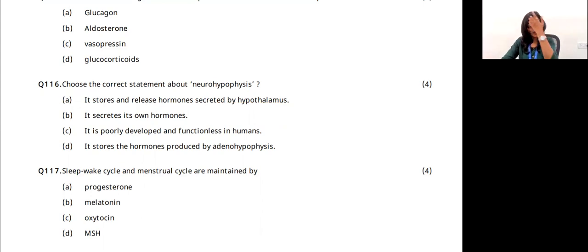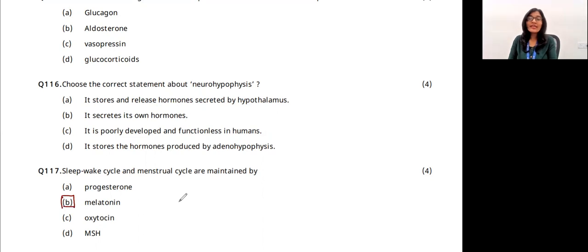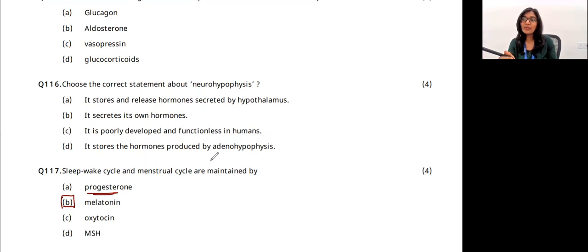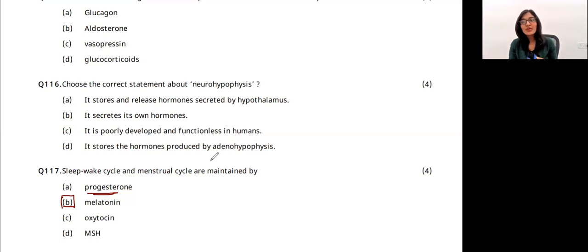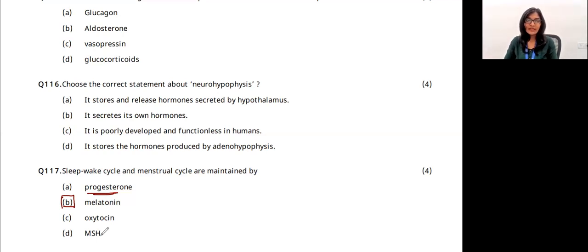Which hormone controls the sleep-wake cycle? It is always melatonin — responsible for controlling sleep. Progesterone makes the uterine walls thicker. Oxytocin is important for uterine contraction during parturition. MSH (melanocyte-stimulating hormone) releases melanin pigments — this is a wrong statement in context. The answer is option B — melatonin.